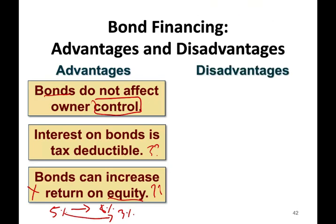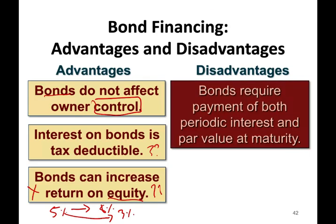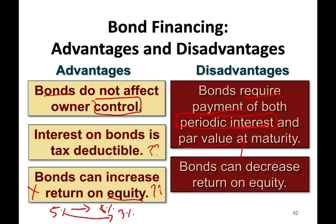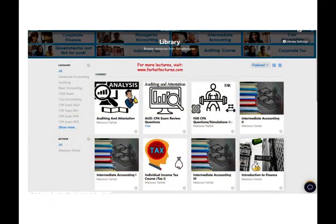The disadvantages of financing with bonds: the biggest disadvantage is it requires payment of interest and par value. You have to come up with that payment whether you are making money or not. That periodic interest payment is a constant pressure on the company, and you have to pay the bond back at maturity. If you finance with stocks, you don't have to pay dividends and you don't have to pay the stocks back. Also, bonds can decrease return on equity if you only earn 3% on a bond that you are borrowing at 5%.